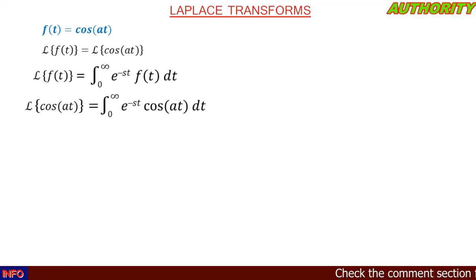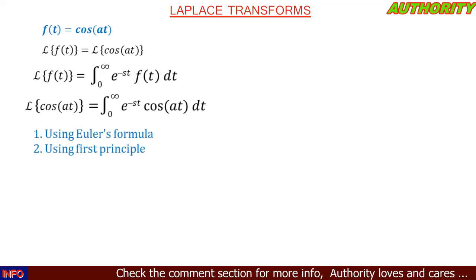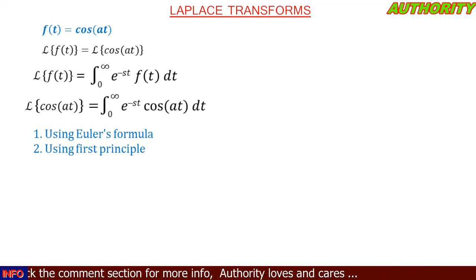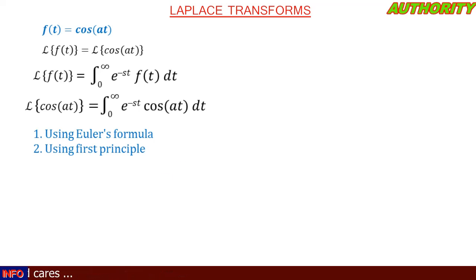To evaluate this we can use several methods, but in this video I'm going to show you two: number one, using Euler's formula, and secondly, using the first principle. Let's solve this using Euler's formula. You know that in Euler's formula, e raised to the power of ix equals cos(x) plus i·sin(x).